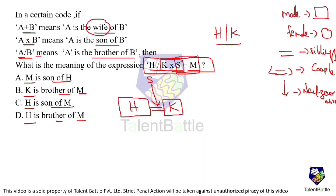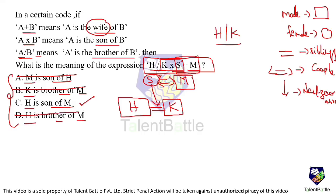S + M means S is wife of M, so M is male and the husband. M and S are a couple and their children are H and K. Now checking the options: Is M the son of H? No — M is the father of H, so that is wrong. Is K the brother of M? No — K is the son of M, so that is wrong. Is H the son of M? Yes — H is male and son of M, so that is correct. The answer is option C.